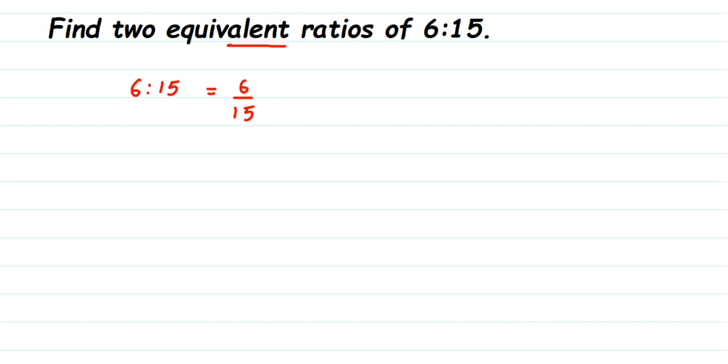Now, how to find equivalent ratios? There are two ways. One is dividing with a common factor, and one is multiplying. When you multiply, you can multiply with any number. But when you're dividing the numerator and denominator, you have to do it with a common factor. Common factors means a number which can divide both.